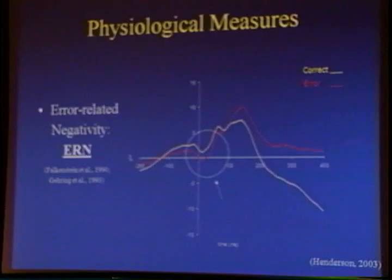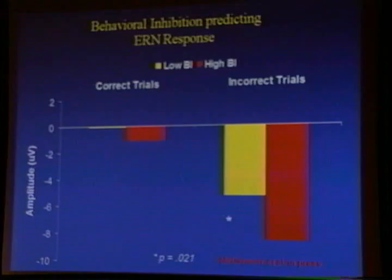The yellow versus the red is when they made an error. Our question is, we knew that the behaviorally inhibited subjects were slower on a trial after they made a mistake. But what did their ERP, or their brains, look like when they made a mistake? Here's the amplitude of the ERN for our behaviorally inhibited subjects and our non-behaviorally inhibited subjects — those are the yellow for correct and incorrect trials.